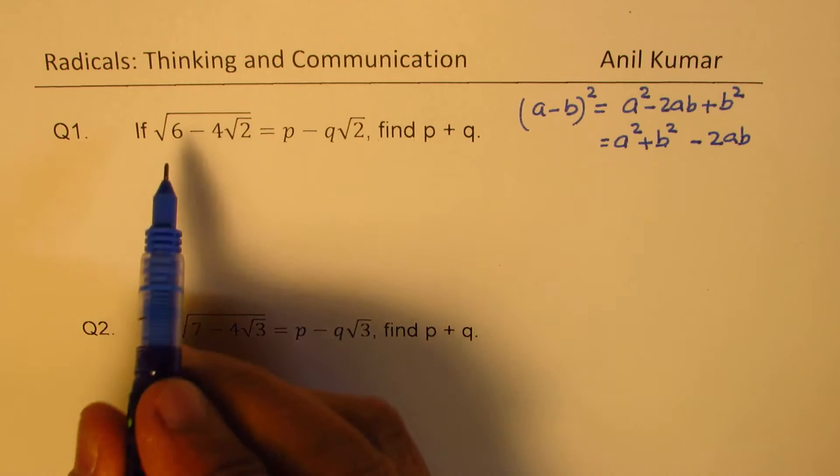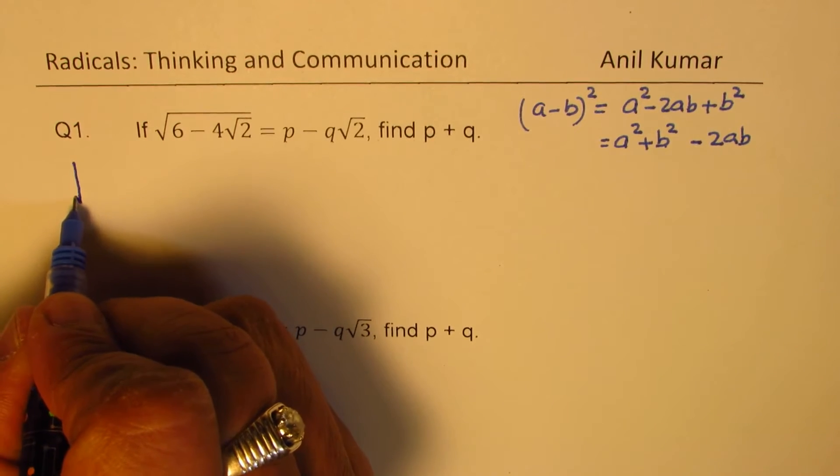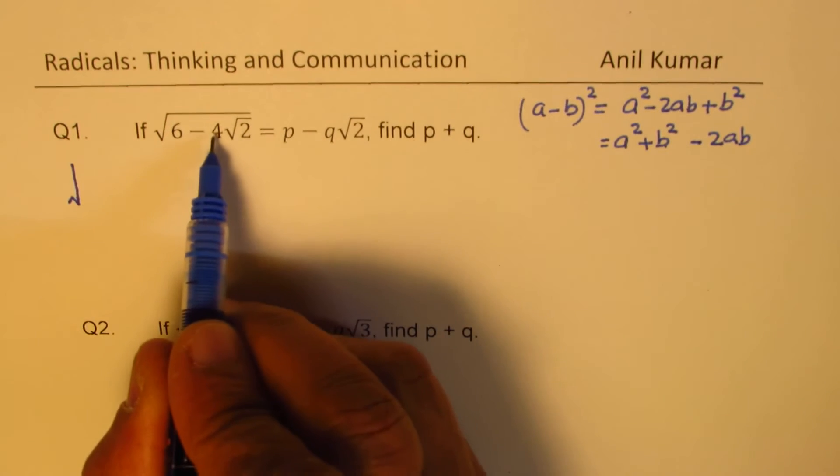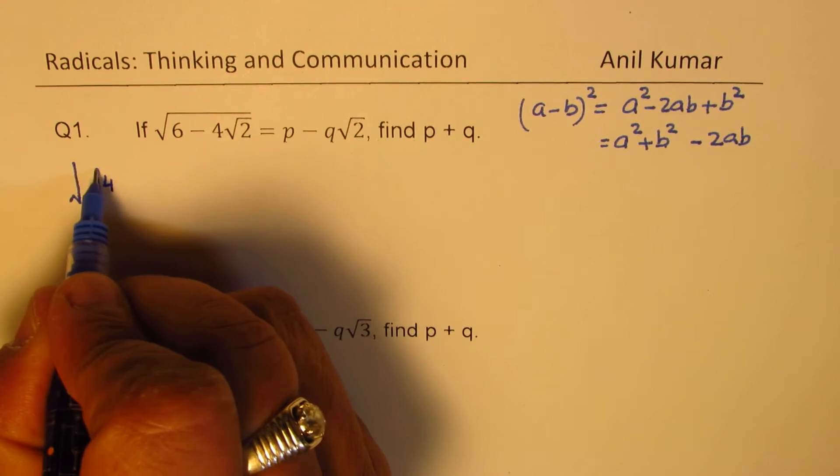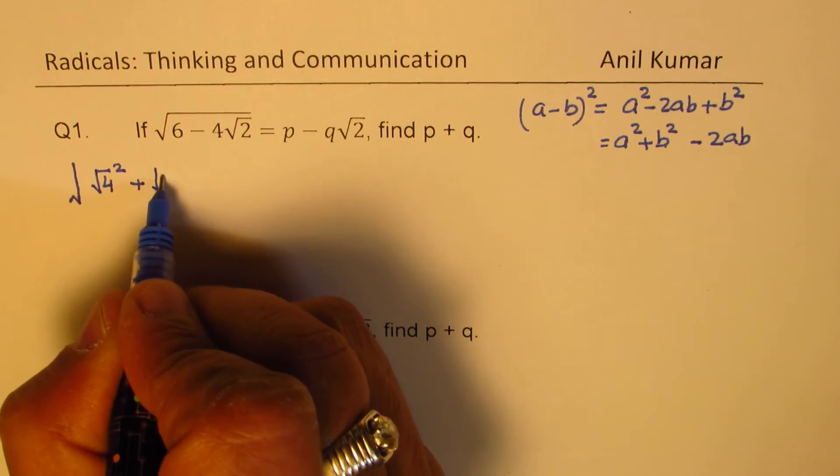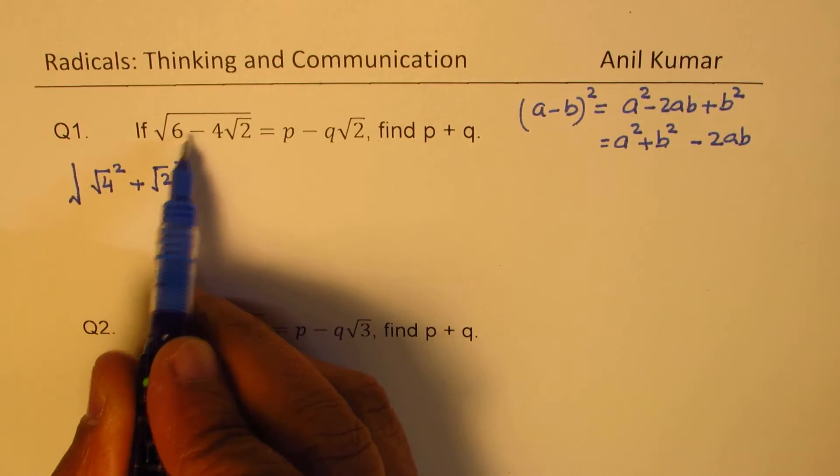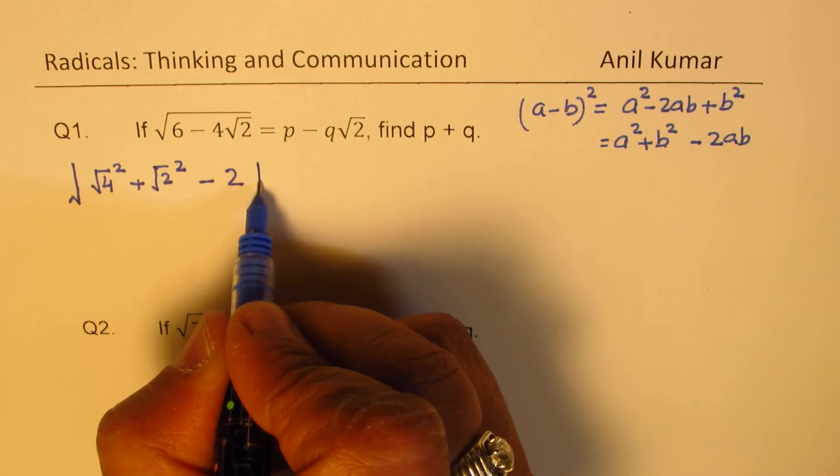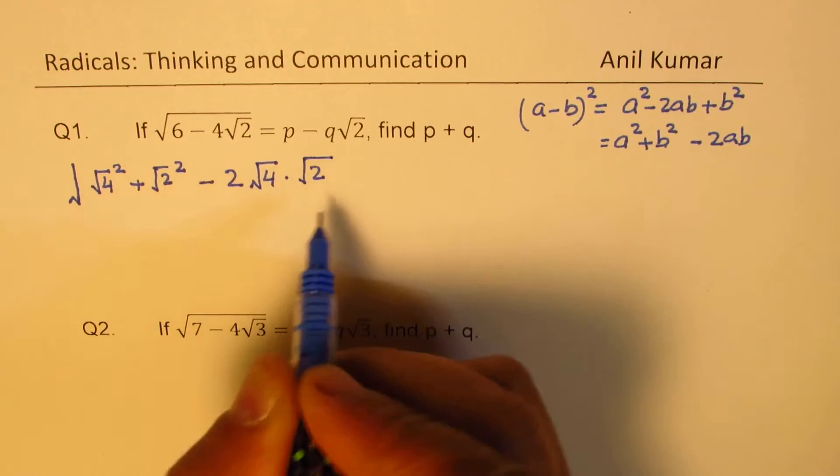So how could you do it? Since we have square root, so let's write down square root here. Within square root 6 can be written as combination of 4 and 2. So we could write this as square root 4 square plus square root 2 square. Now this is 4 plus 2 as 6. Minus 2 times square root 4 times square root 2. Check. Do you get this term 4 square root 2?